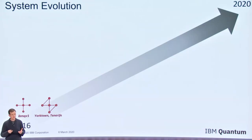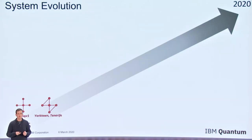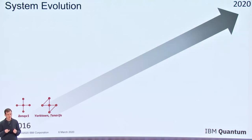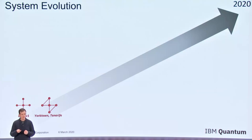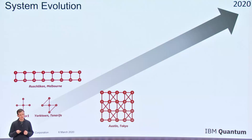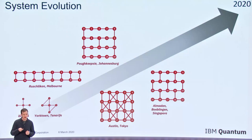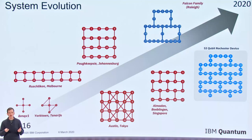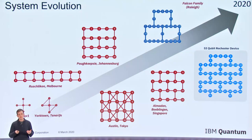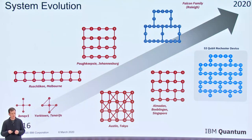The other advance to mention is the gradual evolution towards larger devices. When we first put devices on the cloud in 2016, we started with five qubit devices, and steadily that number has increased over time from 16 to 20 and now even 53 qubit devices. This has created a particular new challenge for benchmarking protocols.